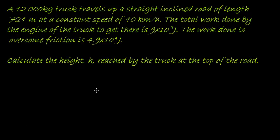Here's a question that comes straight out of the exam. A 12,000 kilogram truck travels up a straight inclined road of length 724 meters at a constant speed of 40 kilometers per hour. The total work done by the engine to get there is 9×10⁵ Joules, and the work done to overcome friction is 4.9×10⁴ Joules. Calculate the height reached by the truck at the top of the road.